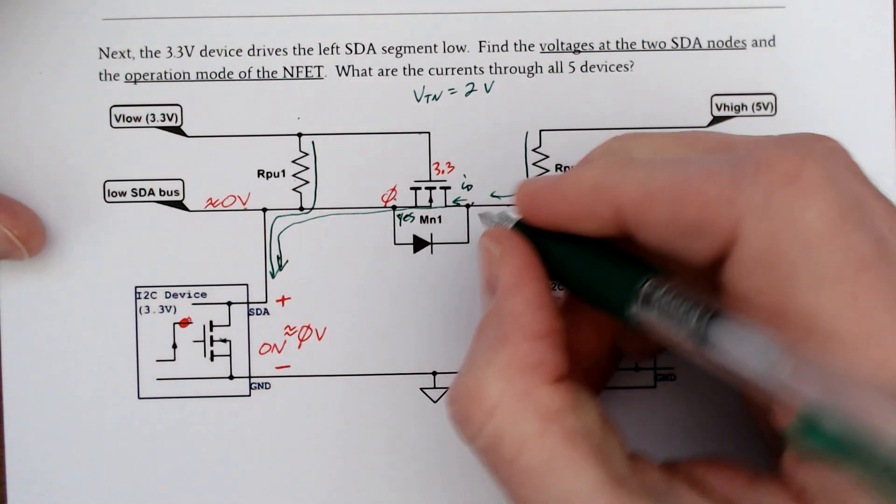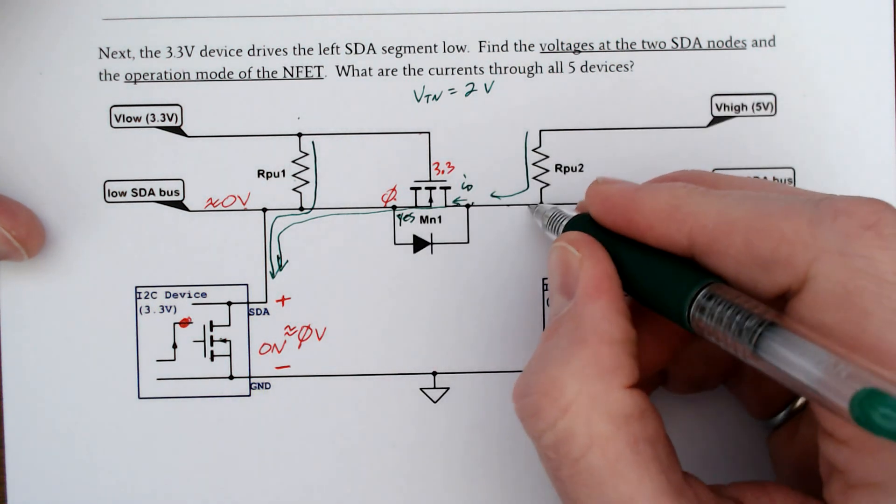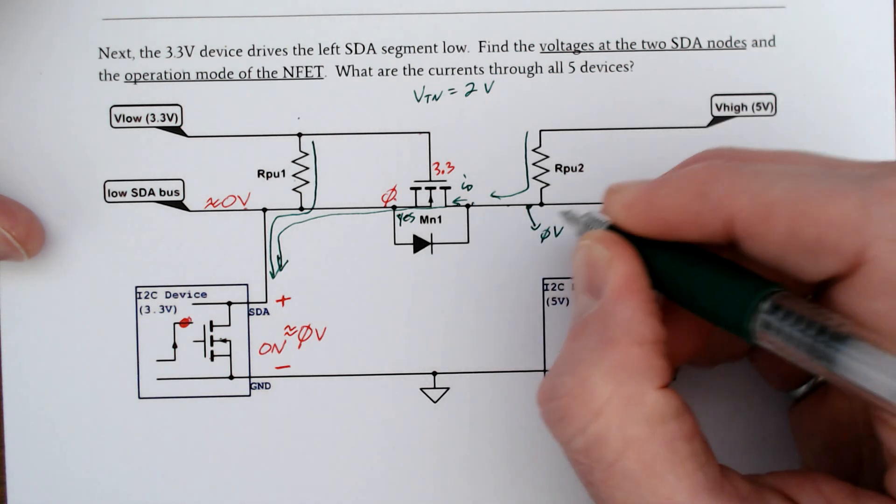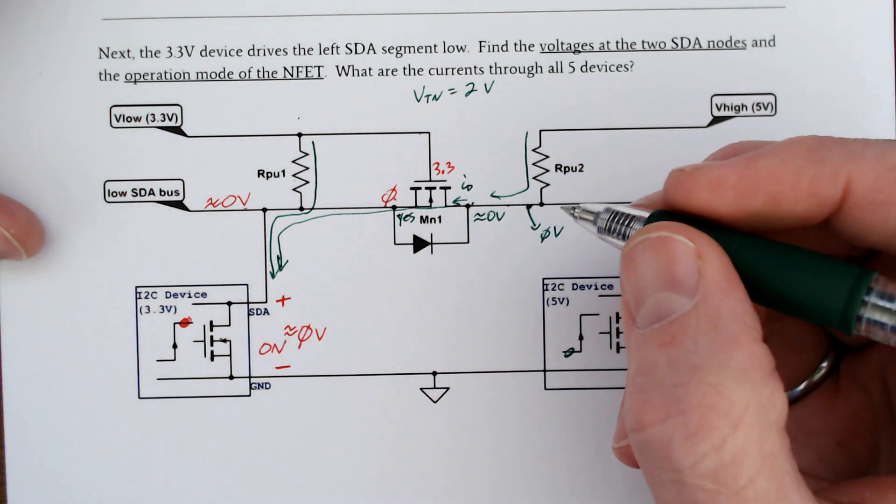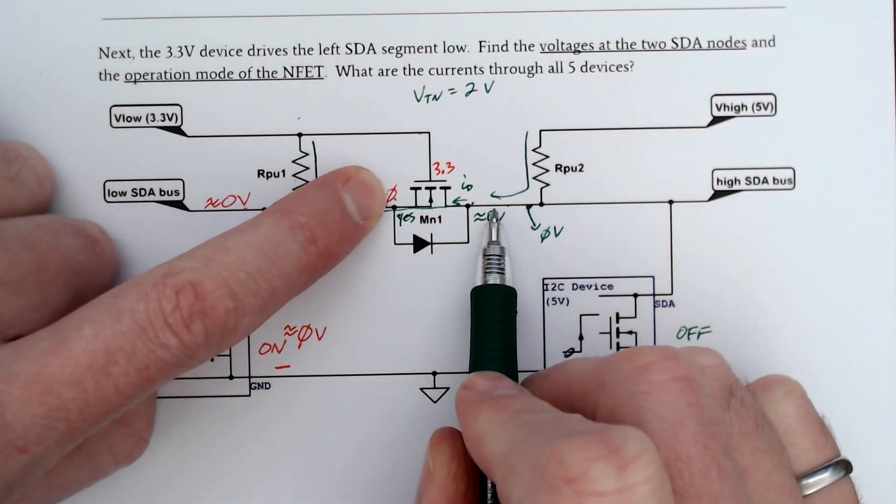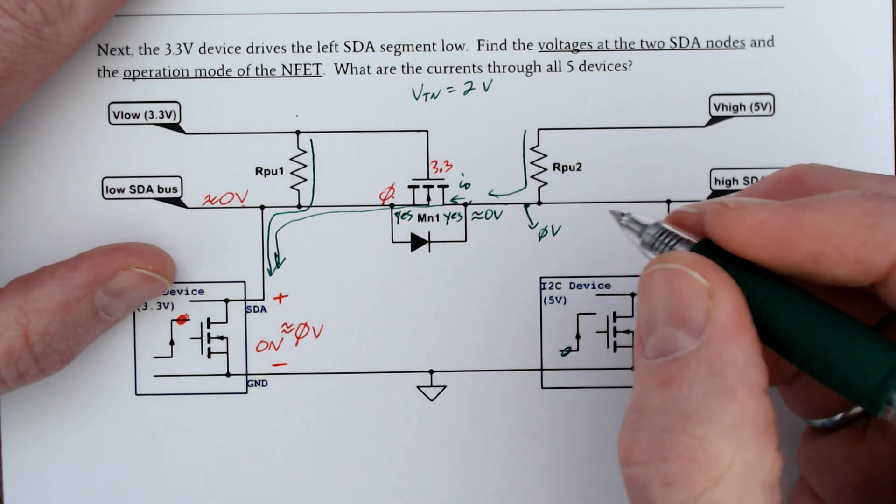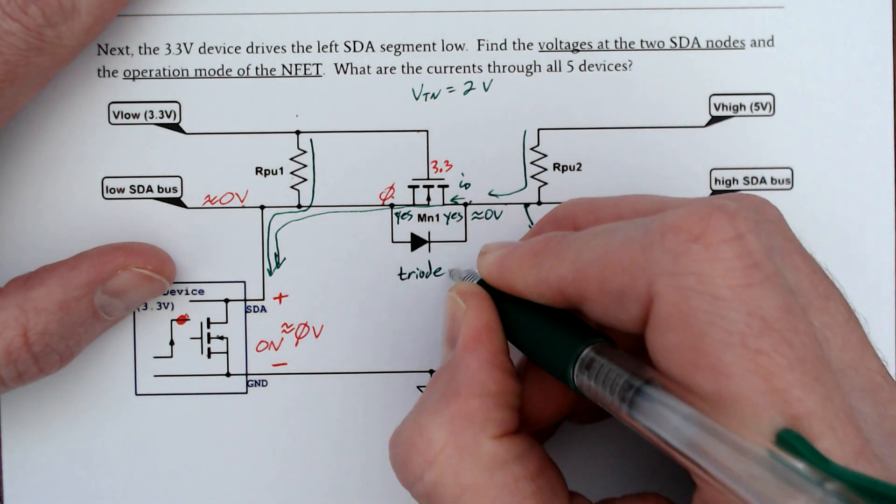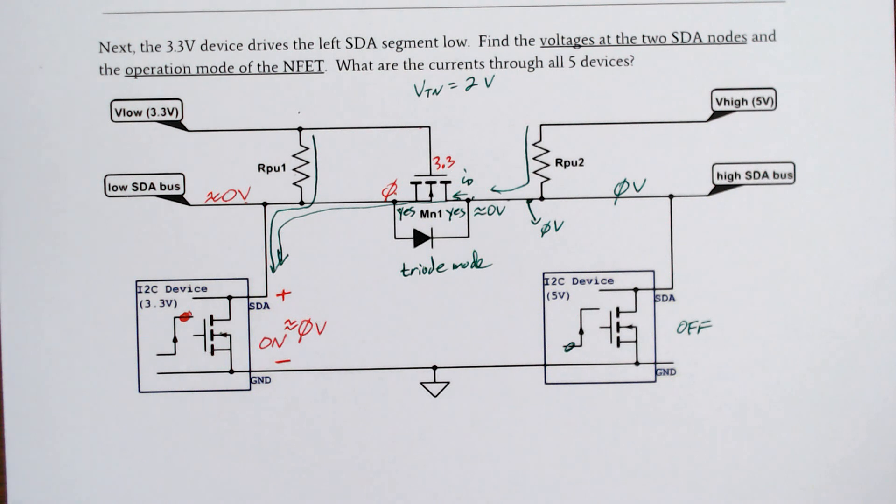We have current coming this way, it's going to go this way. Remember this one is still off. Current flows here, drain current flows here, and we get extra current going this way. This node voltage is going to start high and then it's going to go down to zero volts in time. This node is also zero volts on the right side. If we have zero here, we have zero here, drain-source voltage is clearly zero. We do have a channel on the right side. This MOSFET is in triode mode. This is also zero volts and we're done.